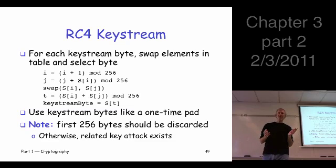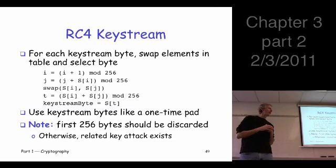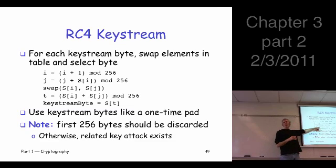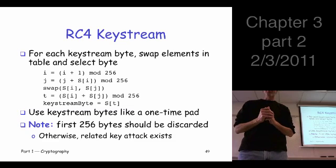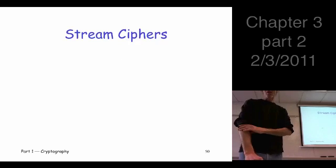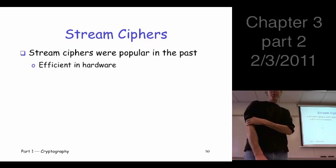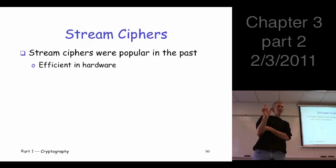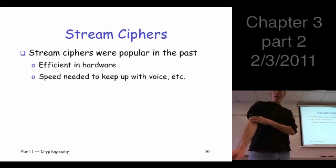For a crypto algorithm, that's about as simple as they get. It's considered strong and is used widely. There is one technical issue: you should take the first 256 bytes that come out and throw them away — don't use them. As long as the sender and receiver agree to do that, it works just fine. That's really the only catch. Stream ciphers were really popular in the past, but not so much today, mainly because of speed — you needed hardware to get the required encryption speeds, but that's not true for most applications anymore.